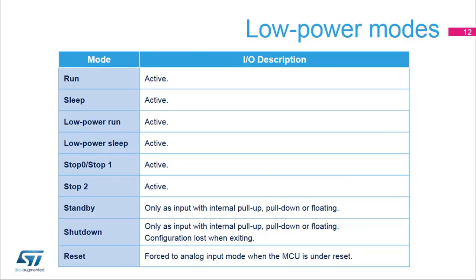I/O pins remain active in all modes except standby and shutdown, where the only available configuration is input with internal pull-up, pull-down resistor, or floating input. When exiting shutdown mode, the I/O configuration is lost. When the MCU is under reset, I/O pins are forced into an analog input mode.